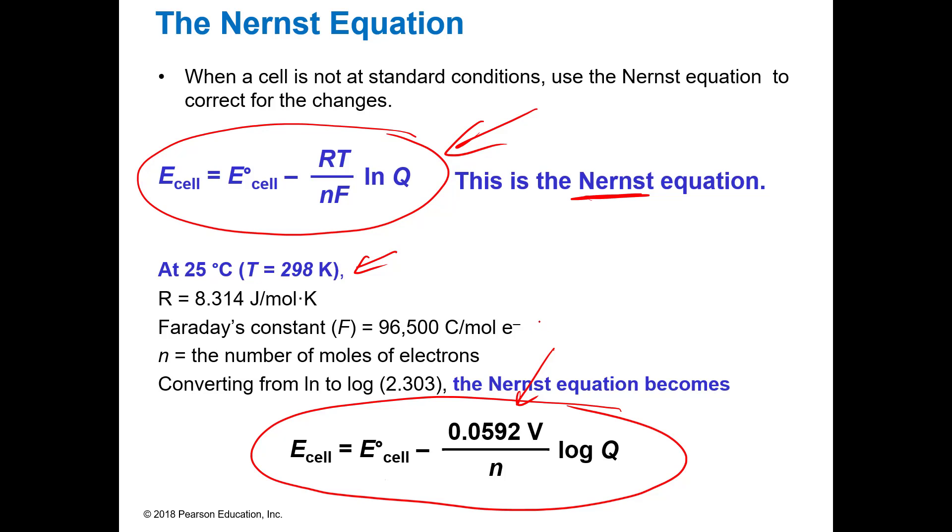If we were to use this other one, F is Faraday's constant which is 96,500 coulombs per mole of electrons. And then you're going to use the energy R, the 8.314 joules over mole K. We converted the natural log to log and the Nernst equation becomes this, which is the form we're going to be using.